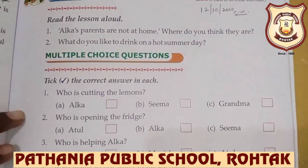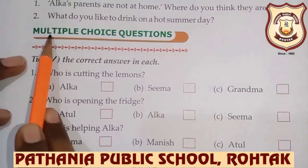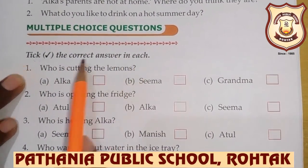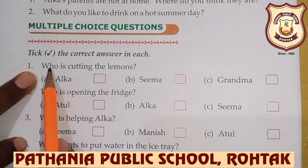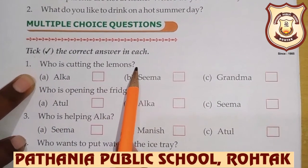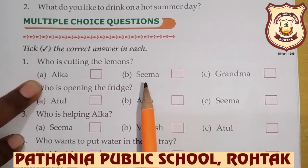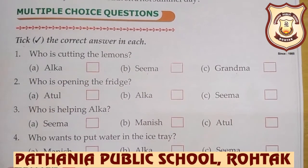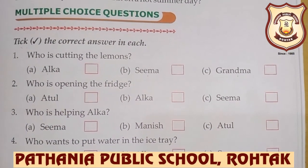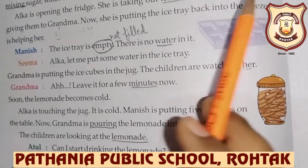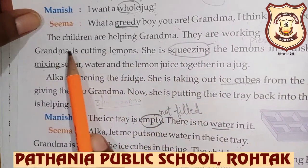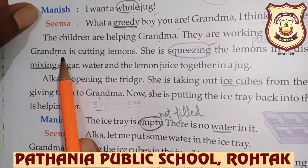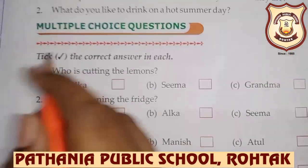Today we will do exercise question number 1, multiple choice question. Take the correct answer in each. Question number 1: who is cutting the lemons? A. Alka, B. Sima, C. Grandma. The answer is C — Grandma is cutting the lemons. So tick on Grandma.